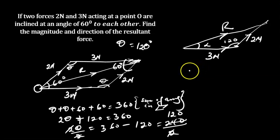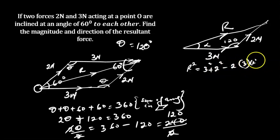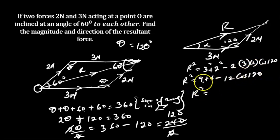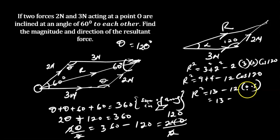R squared equals 3 squared plus 2 squared minus 2 times 3 times 2 times cos 120. That gives us R squared equals 9 plus 4 minus 12 cos 120. Now cos 120 is in the second quadrant where cosine is negative, so cos 120 equals negative 0.5. So R squared equals 13 minus 12 times negative 0.5.